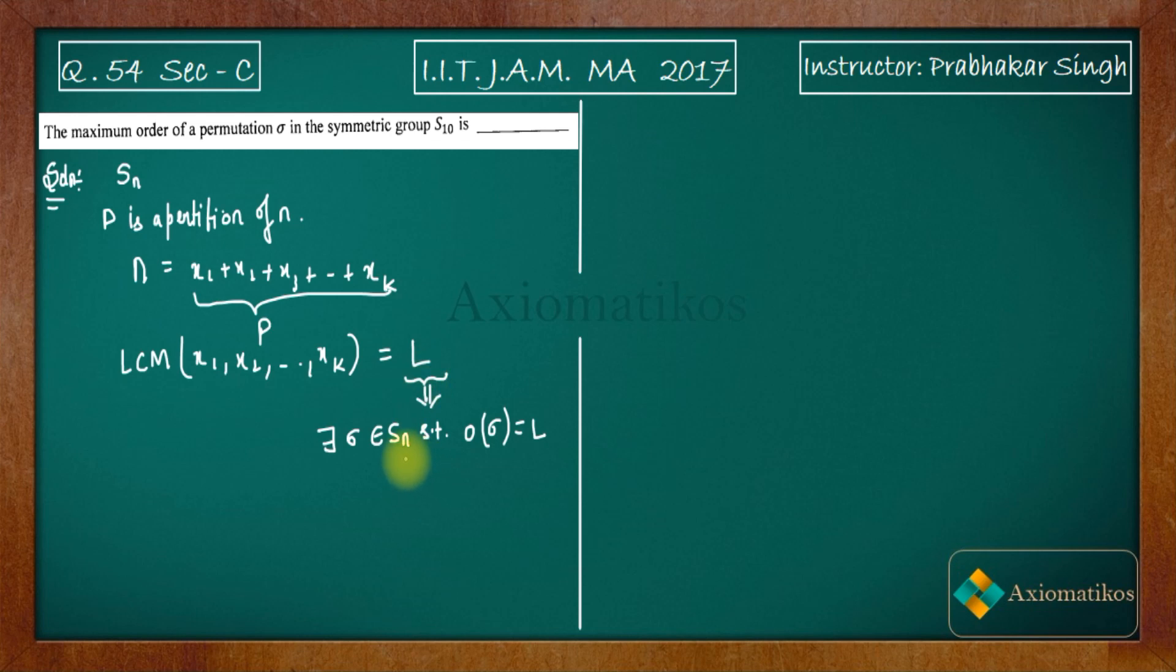For example, let's take n equal to 10, so you have S_10 in your hand. Now see, if you're trying to find out a partition, the first partition for S_10 will be 10 itself. The second partition you can take is 9 plus 1. The third partition you can take is 8 plus 1 plus 1, this is also a partition.